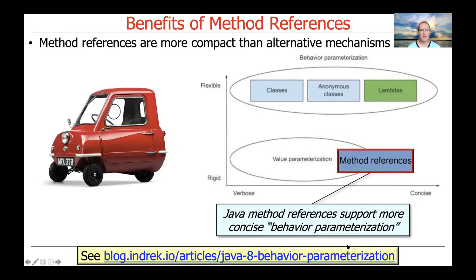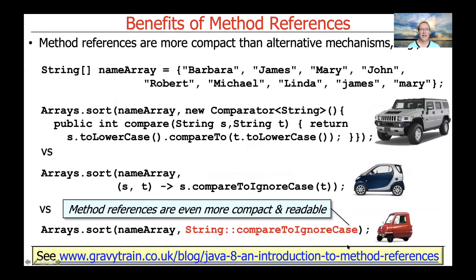Now that we've talked about method references, let's discuss some of the benefits of using them. The main benefit is that a method reference is even more compact than a lambda expression — it's a form of behavior parameterization that's even more concise. The main trade-off is they're not quite as flexible because you're limited to the named method and can't do fancier computations, but they're really concise, so there are situations where they really pay off.